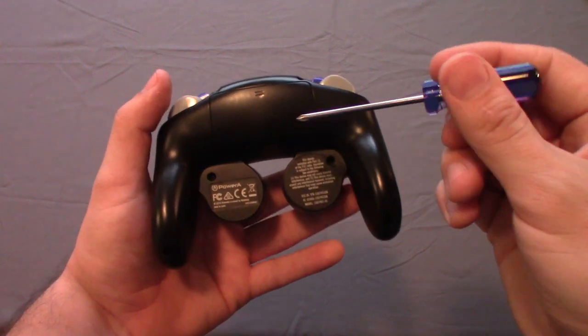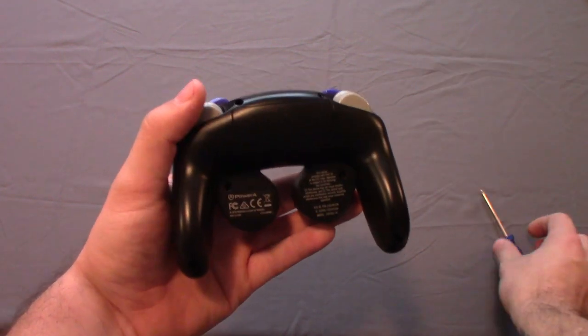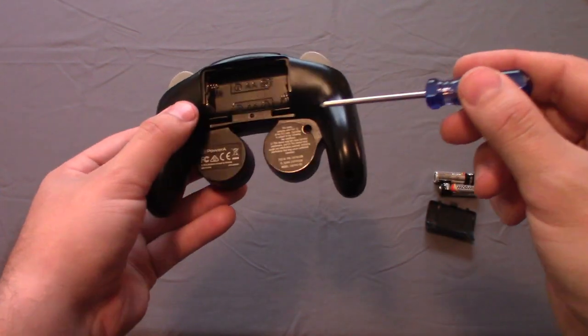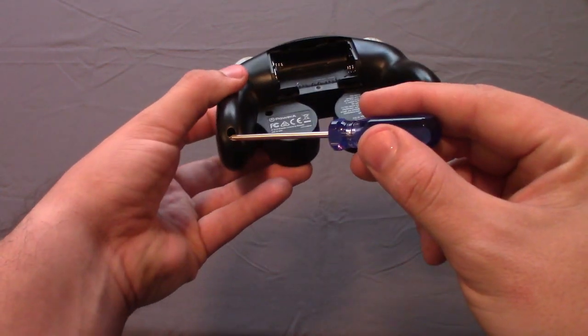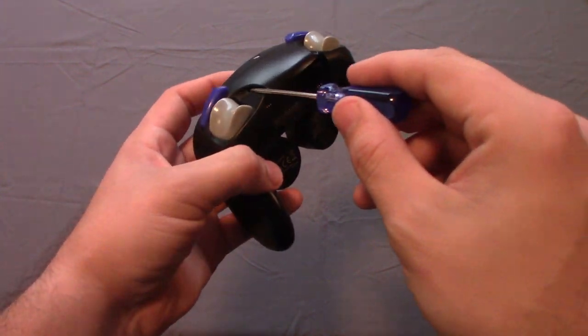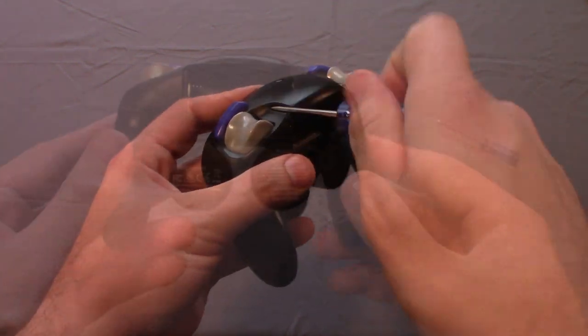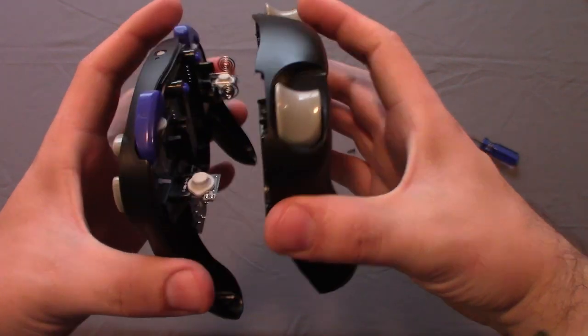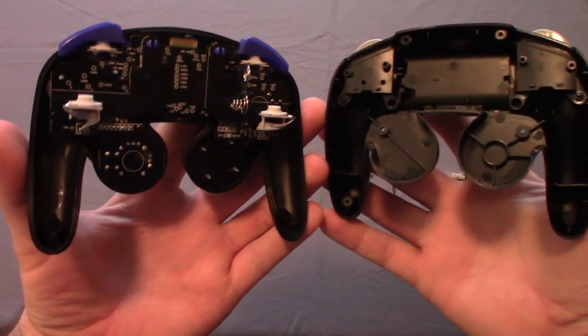If you haven't already, make sure to remove the battery cover and batteries. The contacts are attached to the board and will prevent you from pulling this apart later. There are six screws accessible from the back that are easy to remove. Just make sure to keep these little guys in a safe spot. Now that you've done so, you can pull the shell apart.